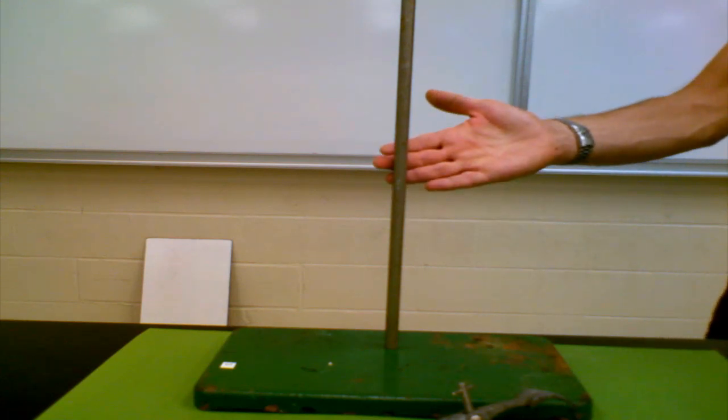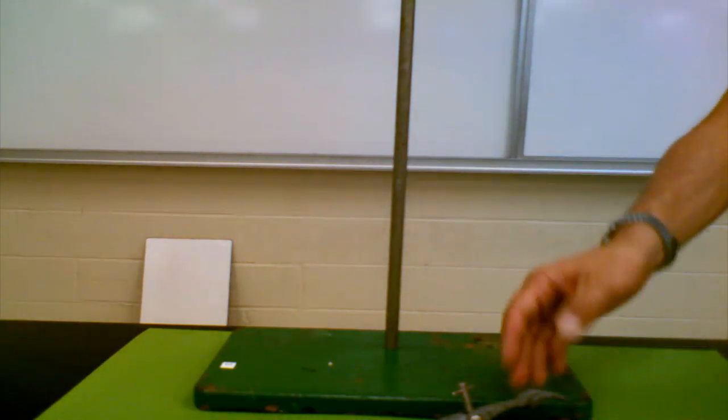In order to place a test tube correctly on a retort stand you need three things. You need your retort stand, you need your clamp, and you need a test tube.